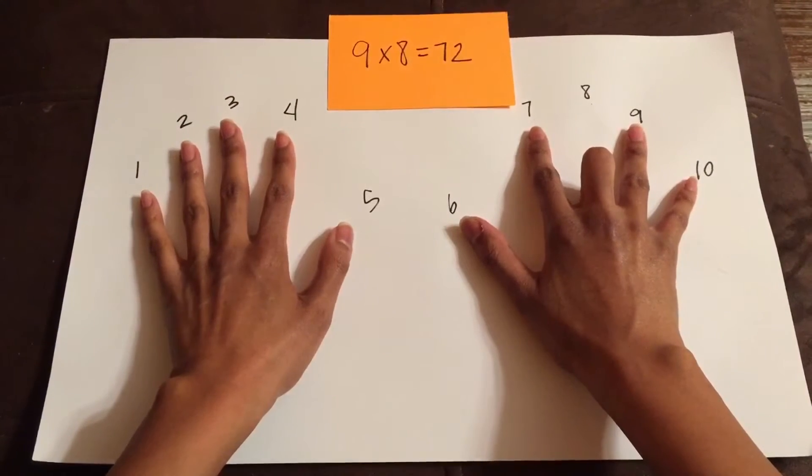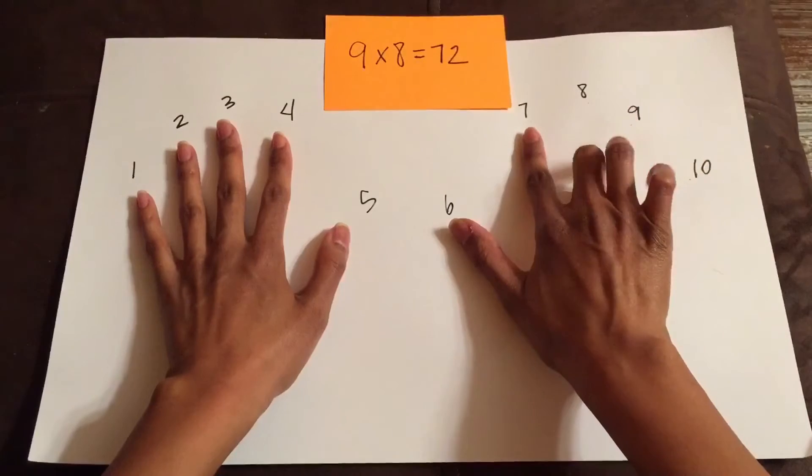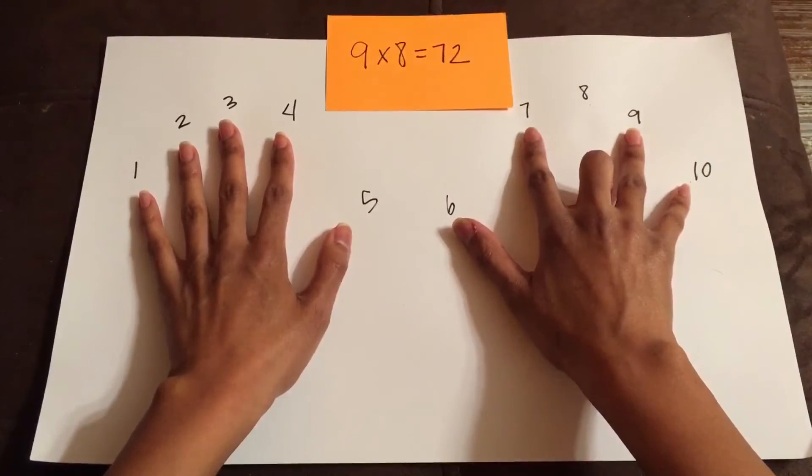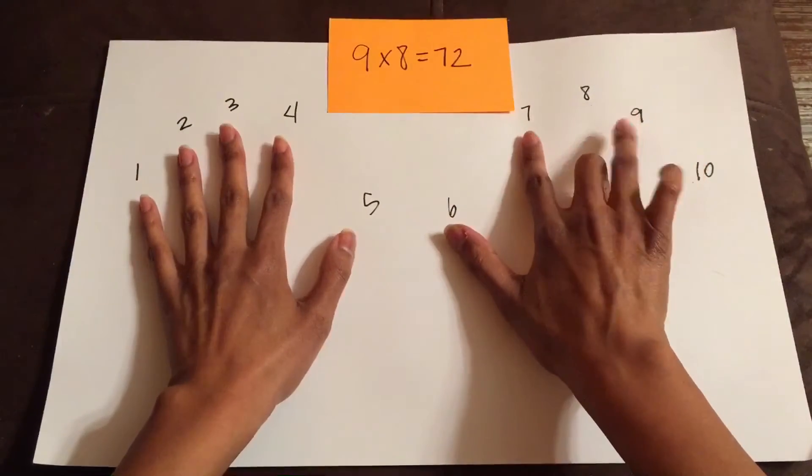And then I would look to my fingers on the right side of the 8, and I would see that I have 2 fingers up. So I know the answer to 9 times 8 is 72.